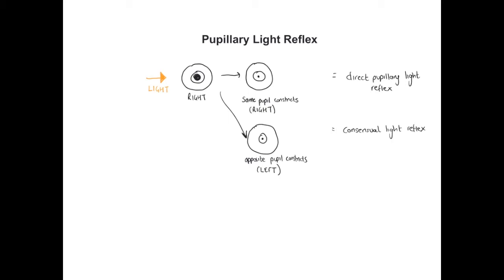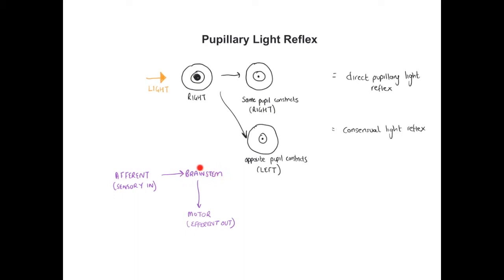There are two arms to this light reflex: the afferent, which is the sensory part of the reflex, and the efferent, which is the output or motor arm. The afferent carries the signal in, detects the light stimulus, and relays that information to the brainstem, where it communicates with a number of cells to ultimately send a motor signal out to the muscle of the iris for it to contract.